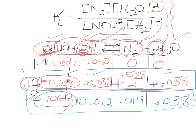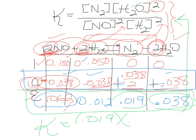So K equals, let's see, nitrogen is 0.019. Now water is 0.038. Now be really careful to pay attention to the superscripts, the exponents, okay? So we have to square this.